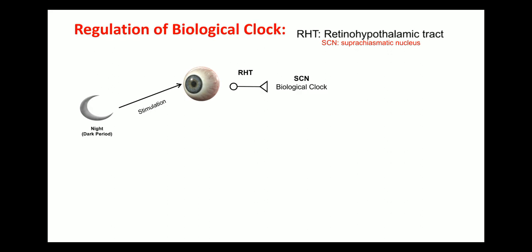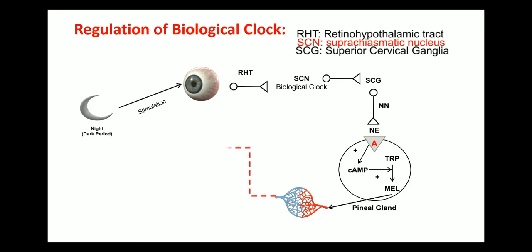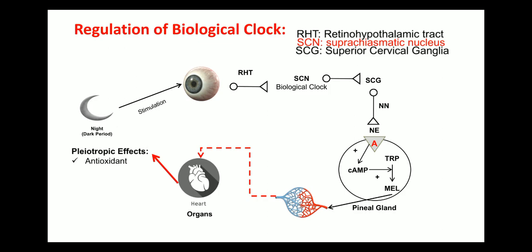The suprachiasmatic nucleus sends information to the noradrenaline neurons via the superior cervical ganglia. The noradrenaline neurons are involved in the secretion of noradrenaline. Noradrenaline then enters the pineal gland where it acts on noradrenaline receptors and is involved in the formation of cyclic AMP. This cyclic AMP converts tryptophan into melatonin. The melatonin is secreted into blood vessels, enters different parts and organs, and has the following pleiotropic effects: anti-oxidant, anti-inflammatory, anti-hypertensive, anti-thrombotic, and anti-lipemic activity.